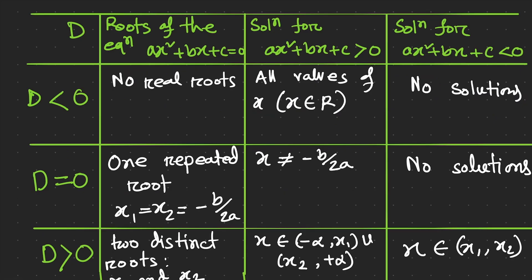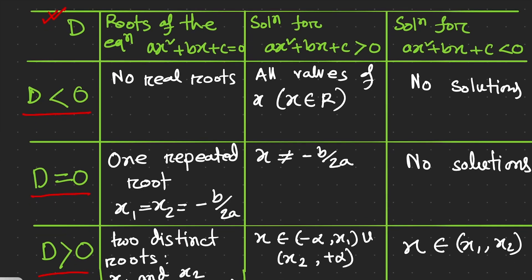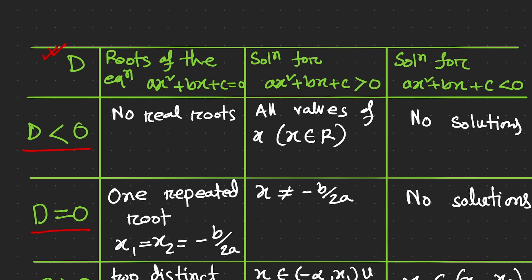In this tutorial, this table is going to be the focus point — the most important topic. The first column represents the discriminant D, and there are three different cases that may arise. Whenever we need to find the roots, we can predict whether they are real, equal, or complex by analyzing the discriminant. The three states are: D < 0, D = 0, and D > 0.